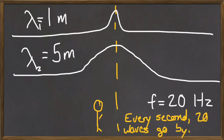Now, they have the same frequency, which means that every second, 20 waves go by. In order for that to be possible, the speed of the first wave has to be 20 meters a second. 20 times 1 is equal to 20 meters a second.